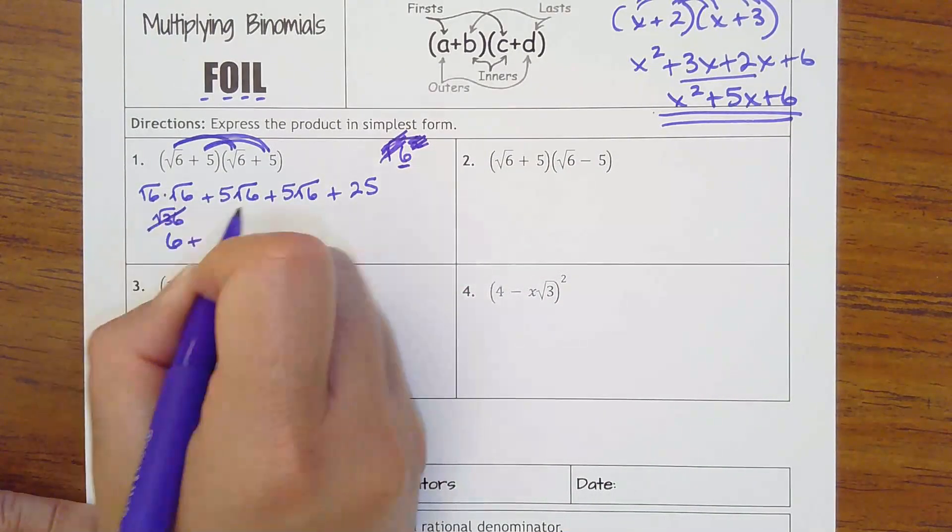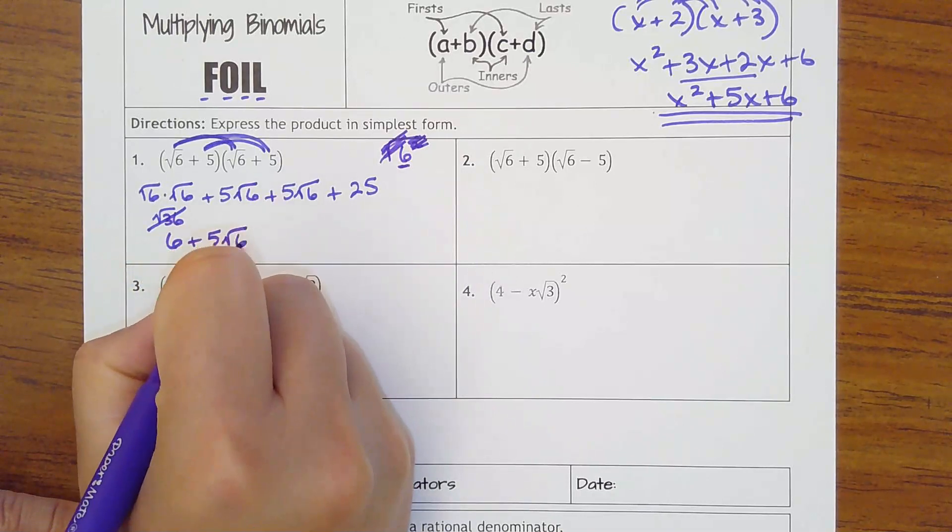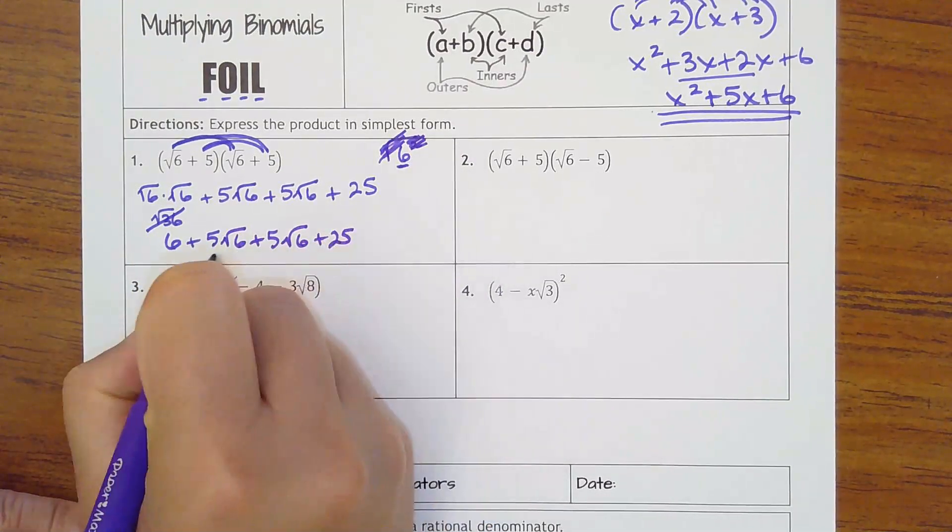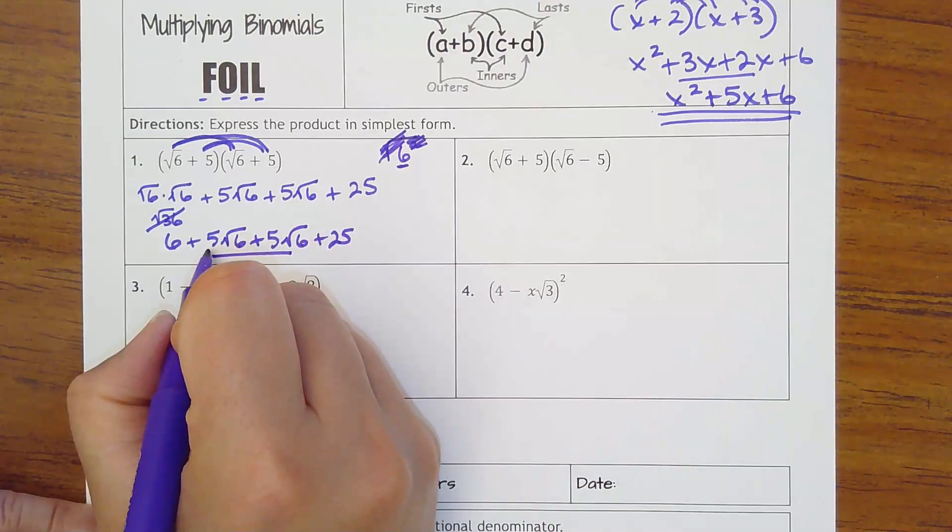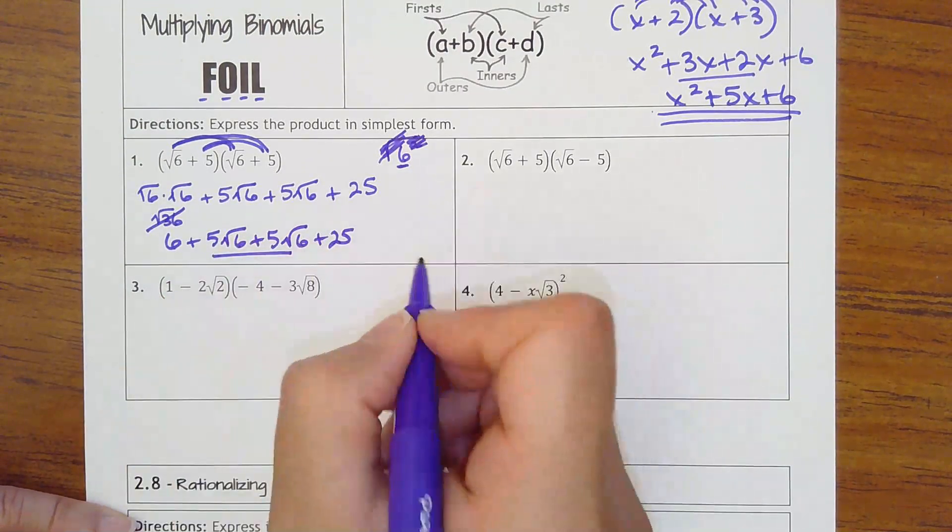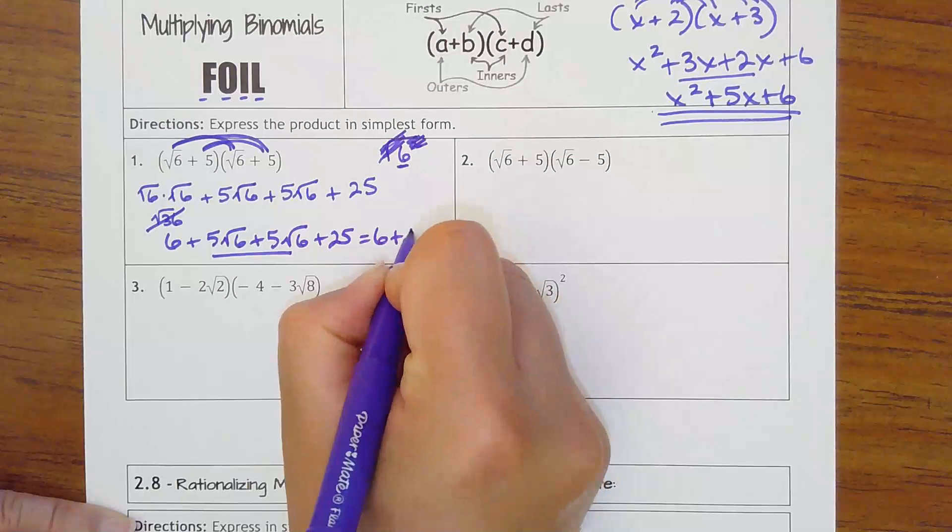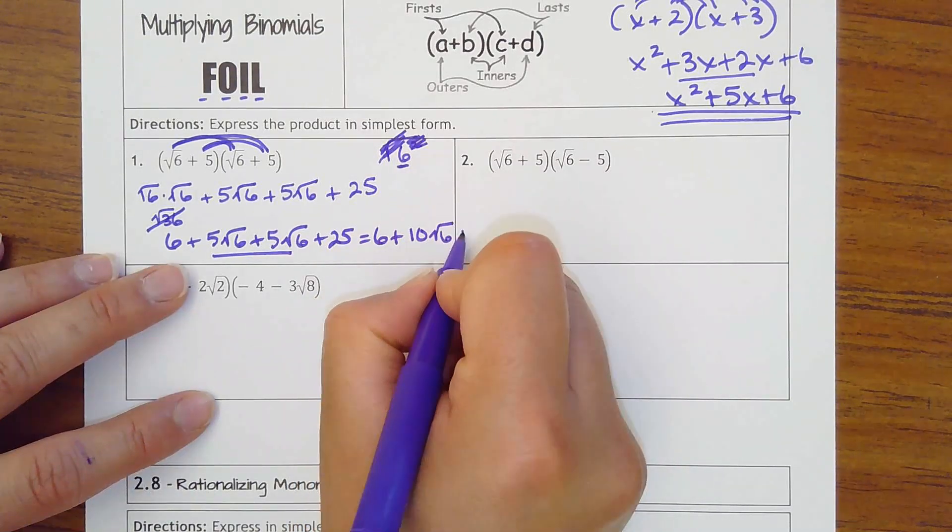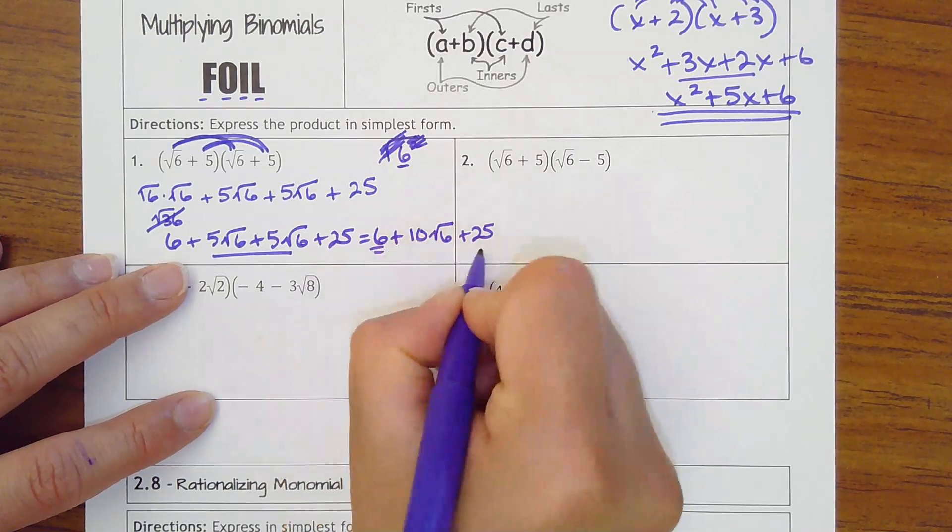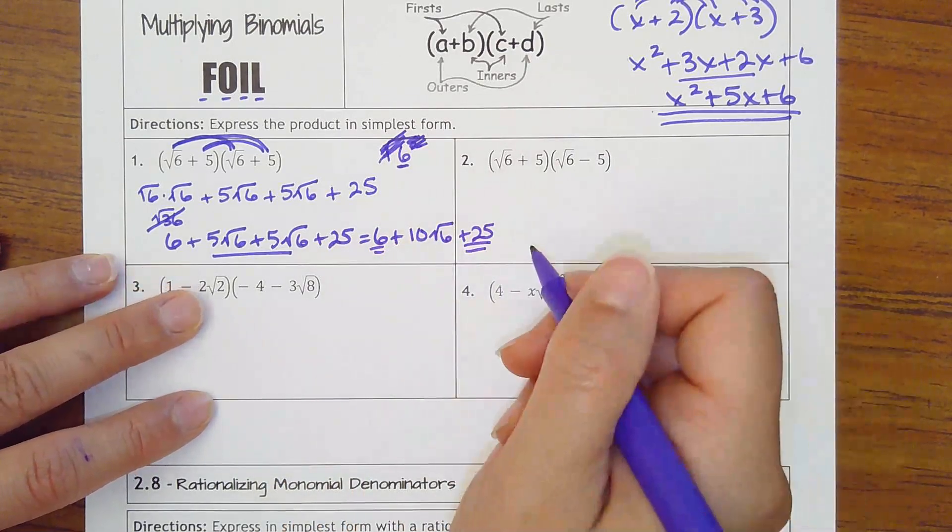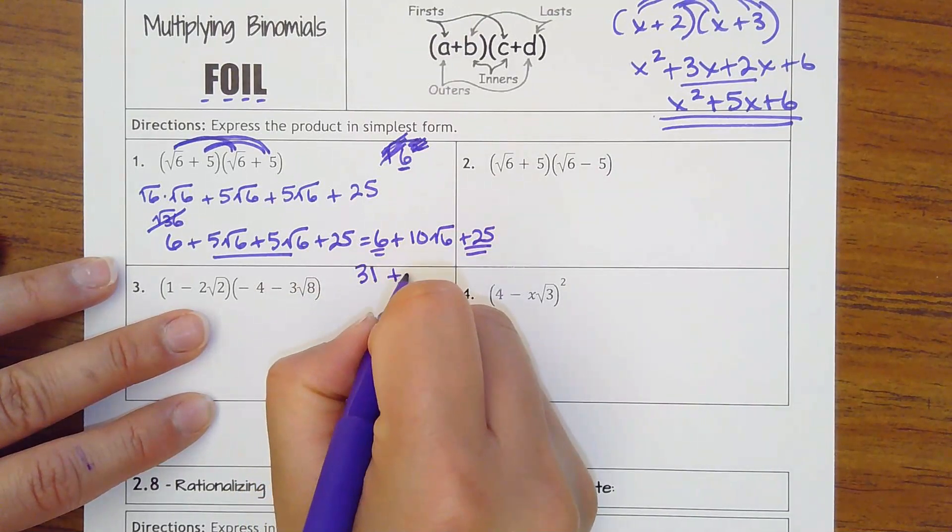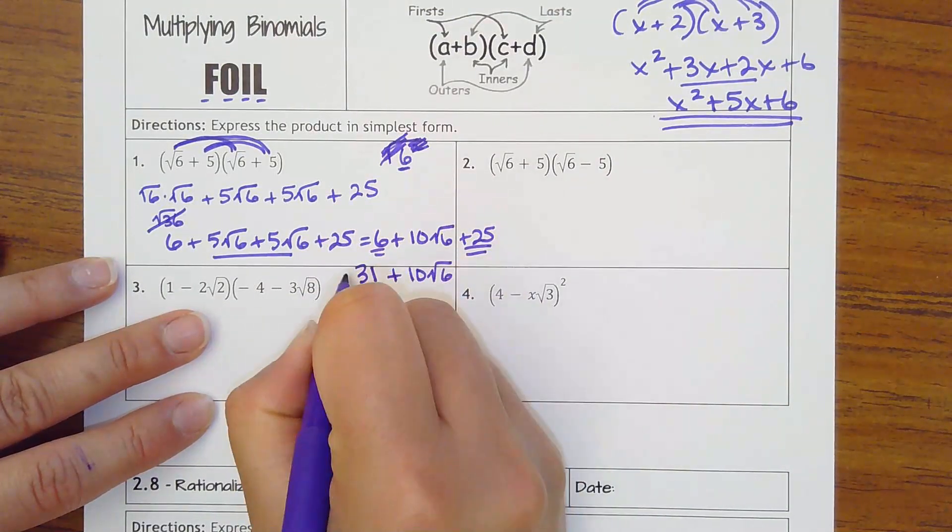So we've got 6 here plus 5 square root of 6 plus 5 square root of 6 plus 25. These are like terms. Remember we just add the leading coefficient. So 5 plus 5 would be 10. So we get 6 plus 10 square roots of 6 plus 25. We also have like terms with the 6 and the 25, which is 31. So it's 31 plus 10 square roots of 6.